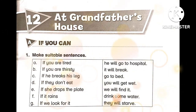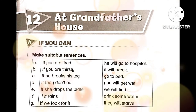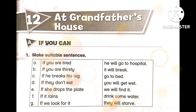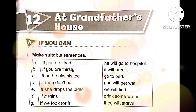The sentences are not arranged, so we have to arrange them. In Column A we have: A) if you are tired, B) if you are thirsty, C) if he breaks his leg, D) if they don't eat, E) if she drops the plate, F) if it rains, and G) if we look for it. In Column B we have: go to hospital, it will break, go to bed, you will get wet, we will find it, drink some water, they will starve.